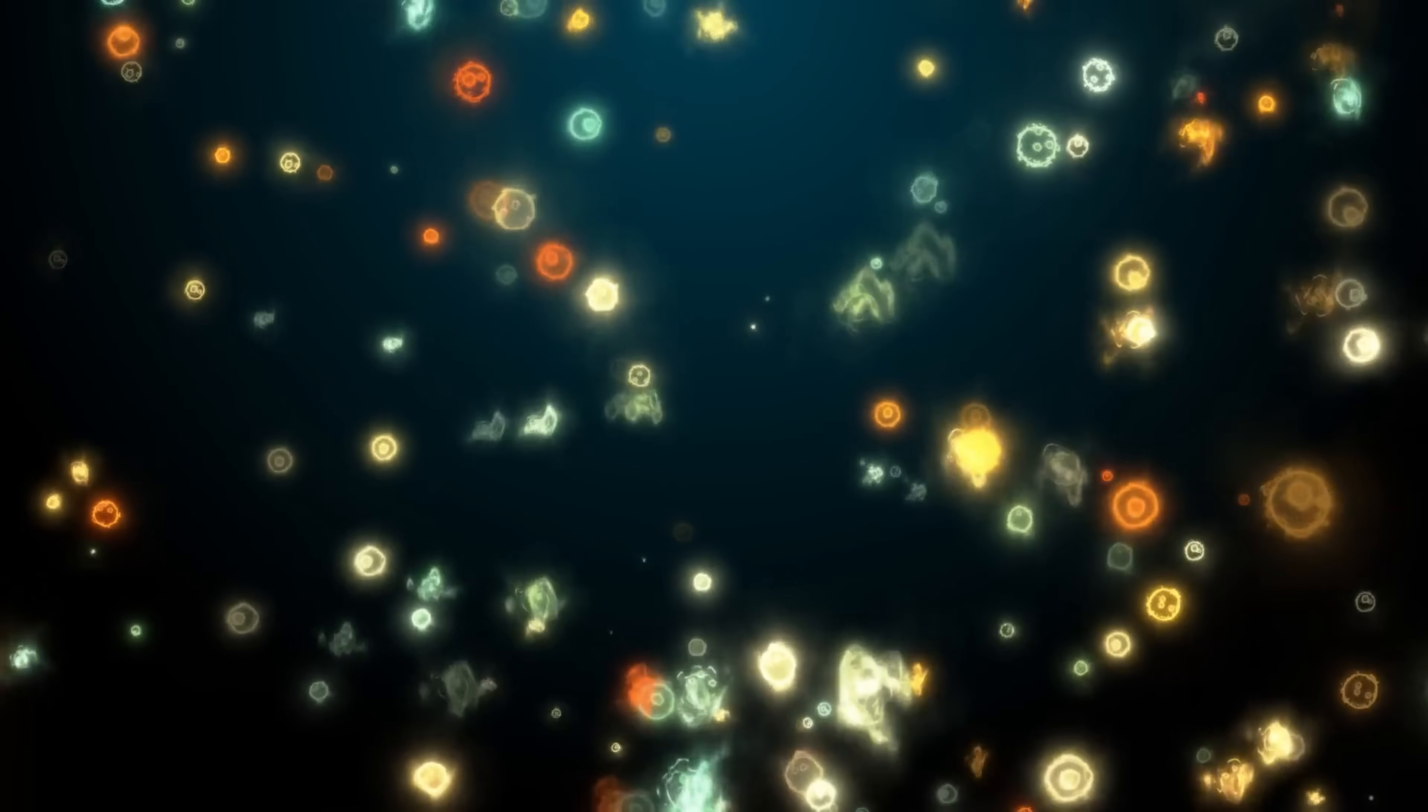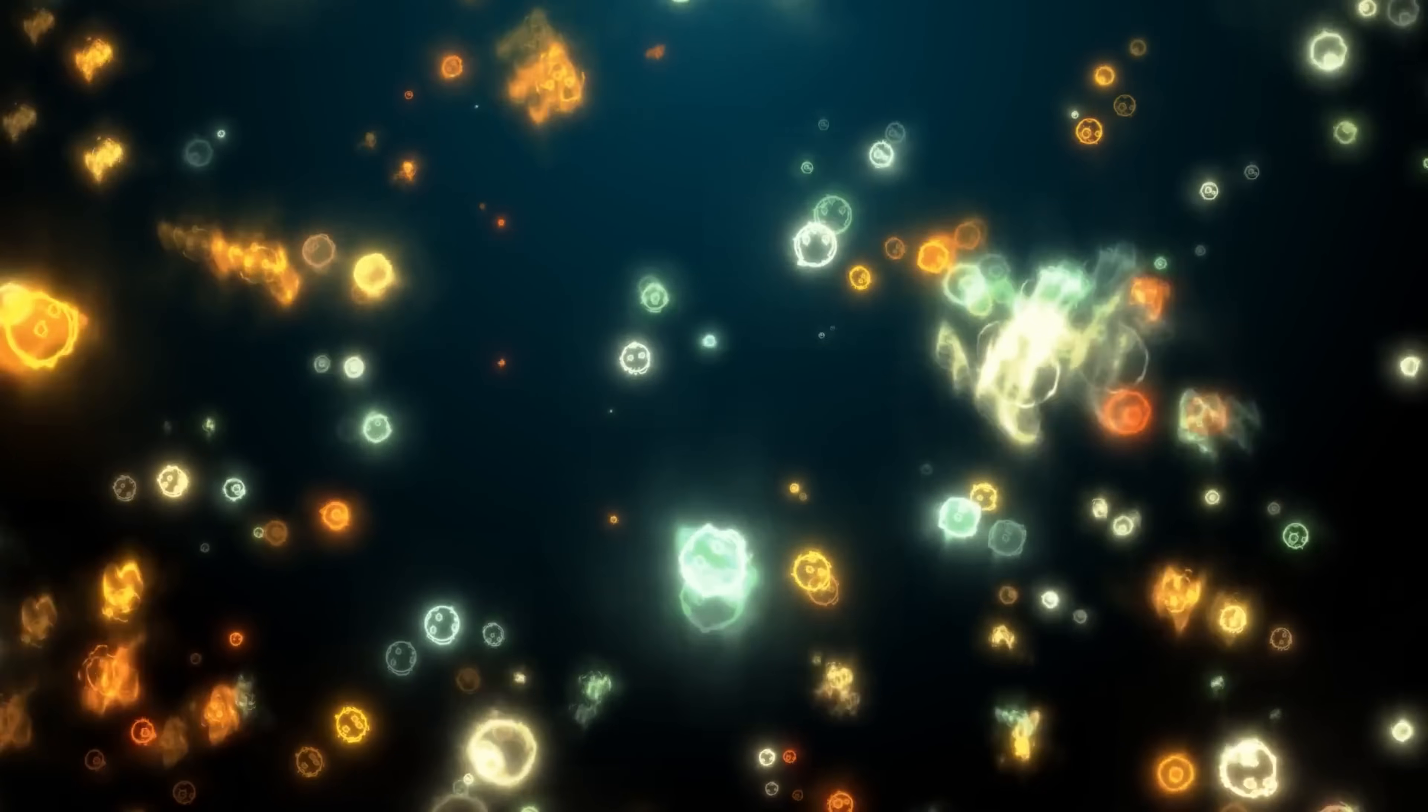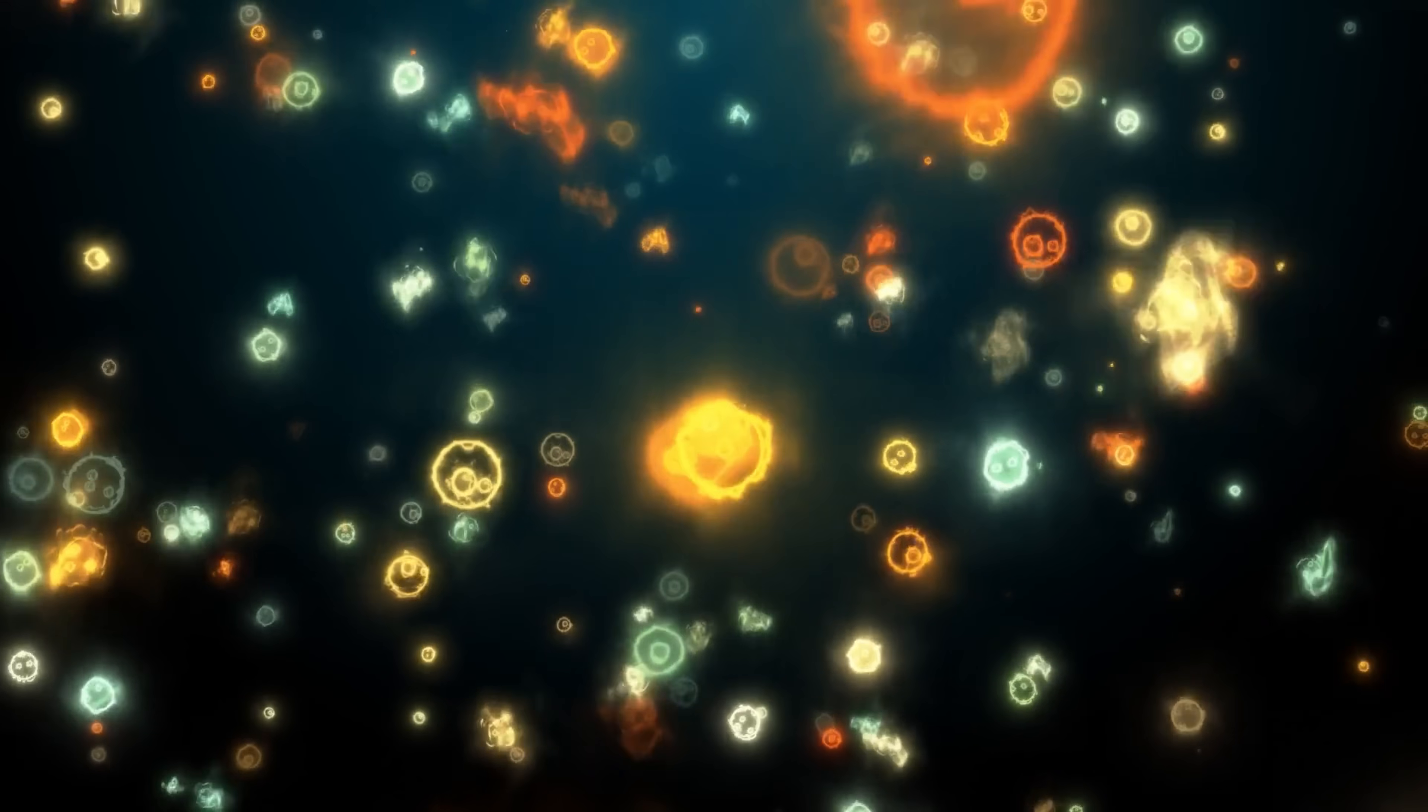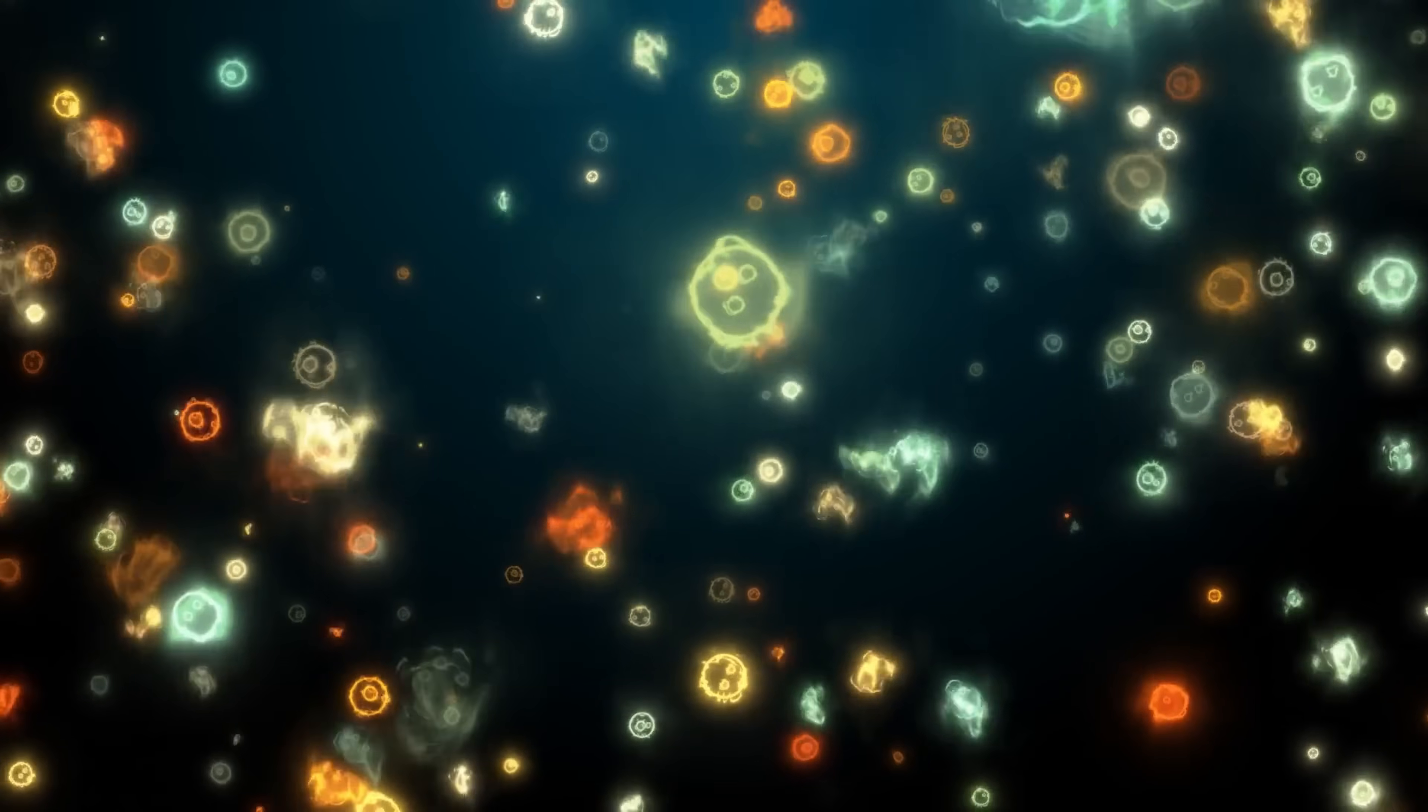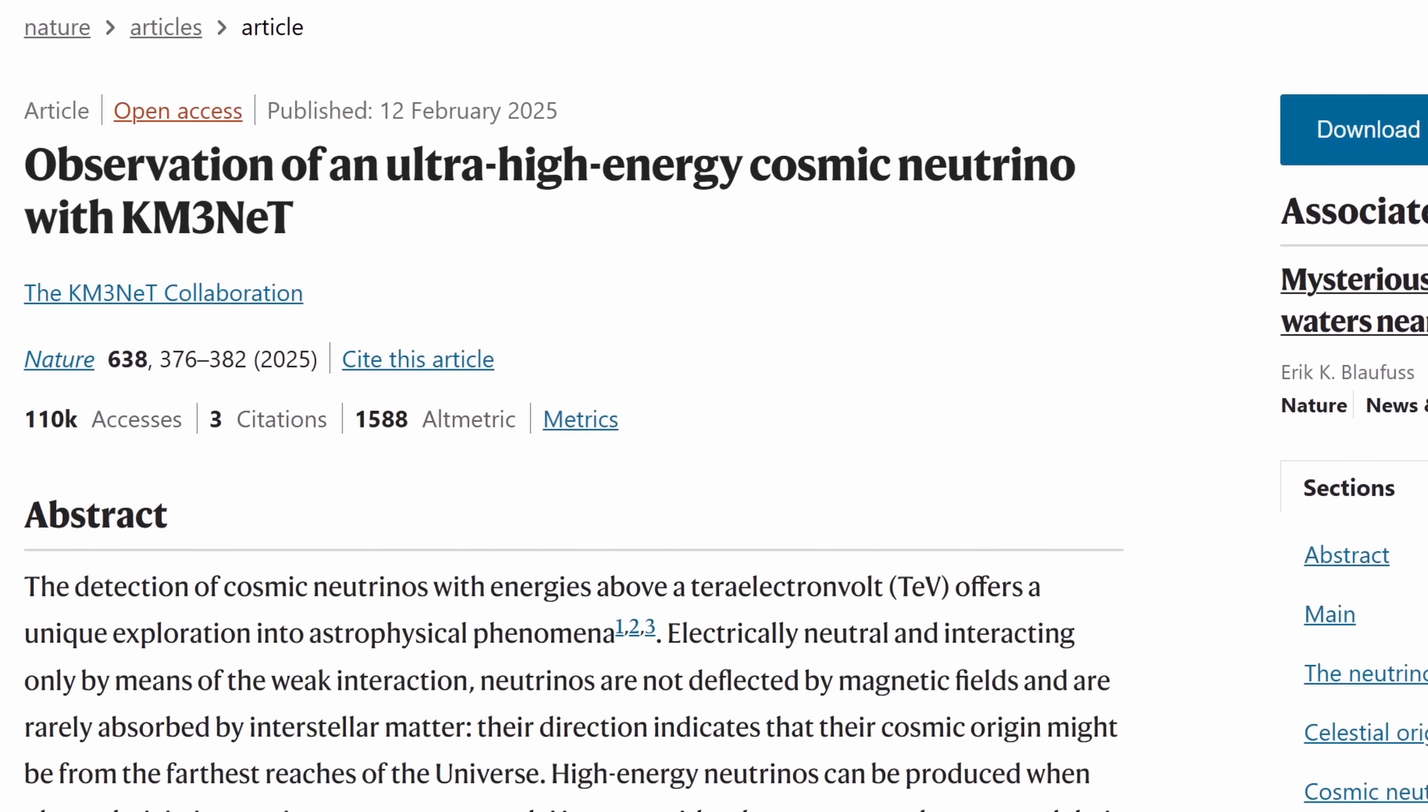And once this particle was analyzed, it was discovered to contain at least 100 times more energy than any previous neutrino ever seen, approximately 220 quadrillion electron volts. And researchers have never seen such a powerful neutrino coming from anywhere. And most importantly, it was even unknown what could have created such a powerful event. The study in the description describes this in more detail.